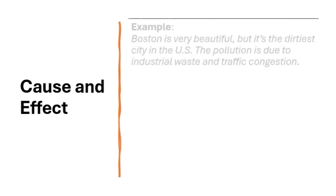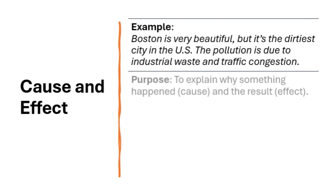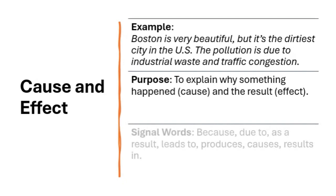Cause and effect is a little different. Here, you're explaining why something happens — the cause — and what results from it — the effect. Let's take the example of pollution in Boston. You would explain that the cause, industrial waste and traffic congestion, leads to the effect: Boston's status as one of the dirtiest cities in the U.S. Cause and effect structure is really useful for explaining relationships between events or phenomena, showing how one thing leads to another.